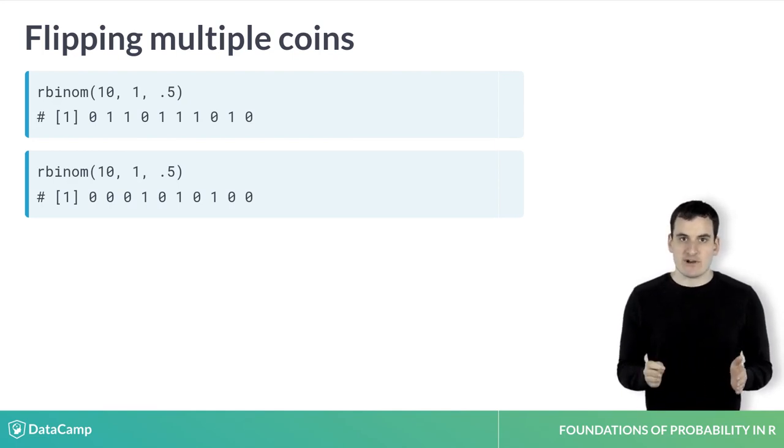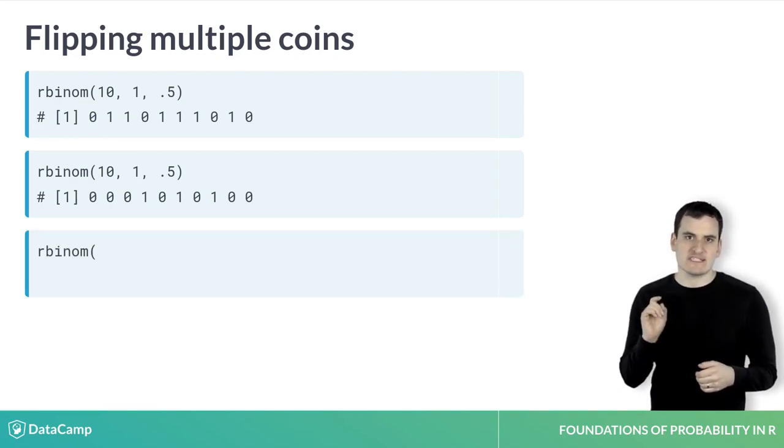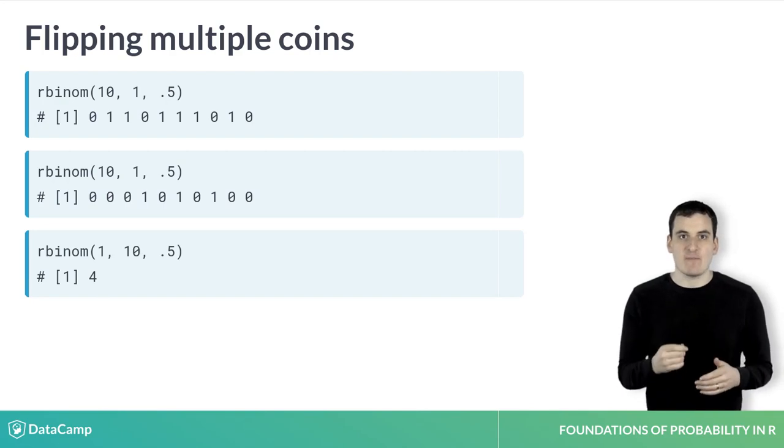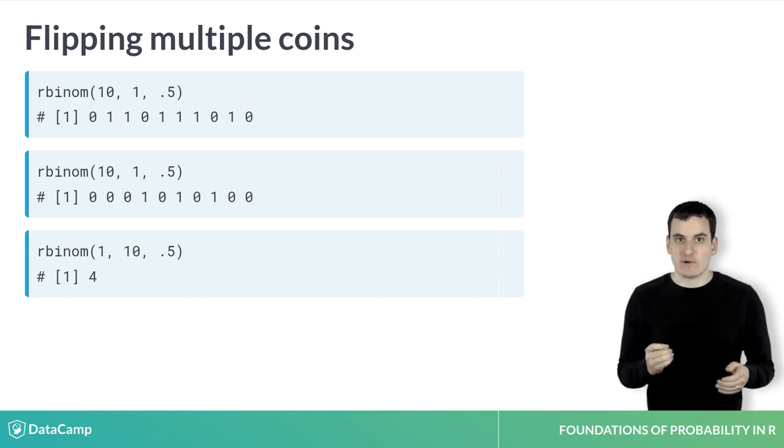Right now, each draw has only one coin flip. Rather than counting the heads in this way, we could take just one draw and use the second argument to specify how many coins should be flipped within each. At this point, the function will simply return the number of heads out of 10. Here, we did one random draw and got a result of 4.